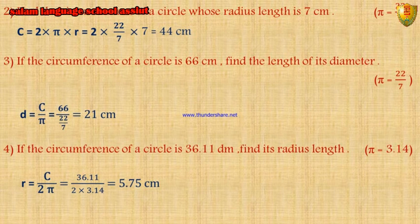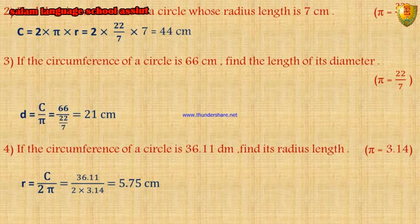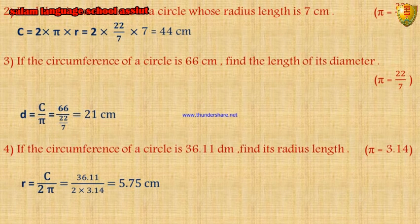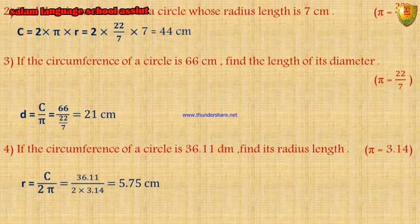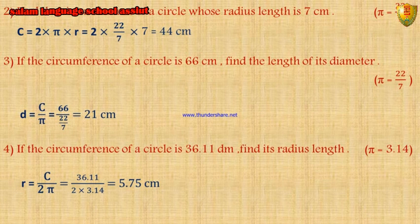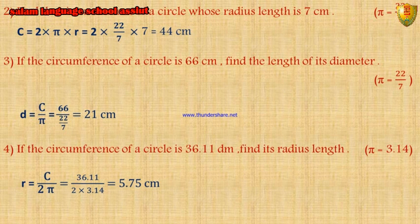Number 3: if the circumference of a circle is 66, find the length of its diameter. Diameter D equals circumference divided by π, equals 66 divided by 22 over 7, equals 21. Number 4: if the circumference of a circle is 36.11 cm, find its radius length. Radius r equals circumference divided by 2π, equals 36.11 divided by 2 times 3.14, equals 5.75 cm.